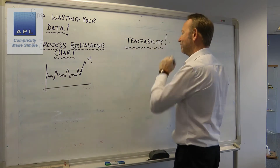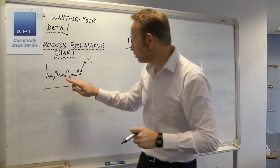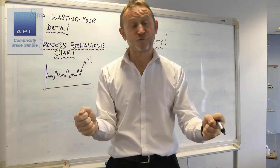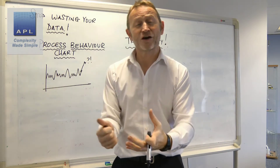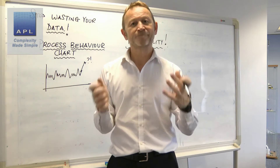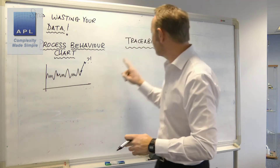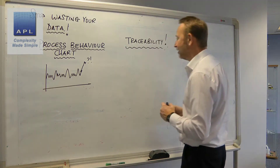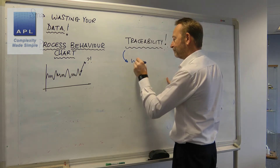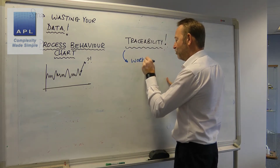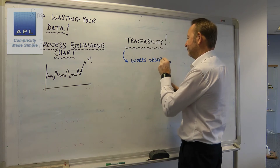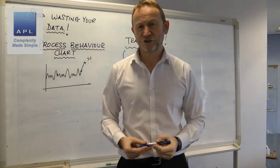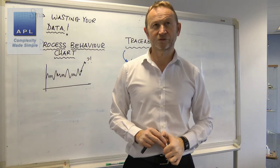The data is only stored for traceability — it's not stored to be useful. It's not stored as gold. All of this data is absolutely gold; it's cost fortunes to collect and wasted thousands of hours in setups, yet they're not using it. Because they only use it for traceability, they store it by works order number, which makes retrieval by part extremely difficult.